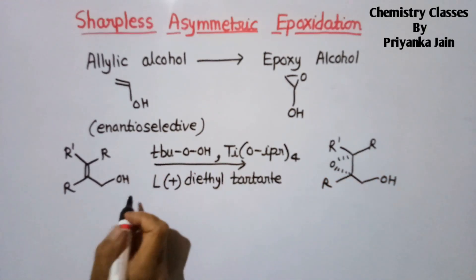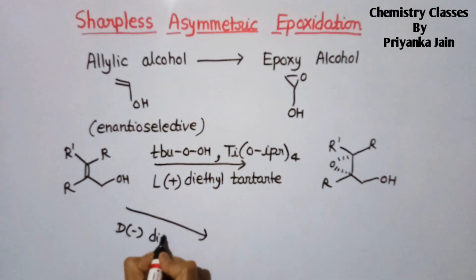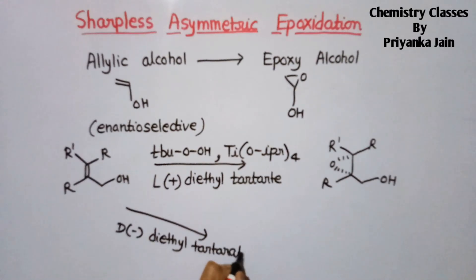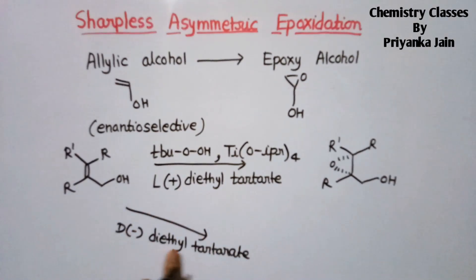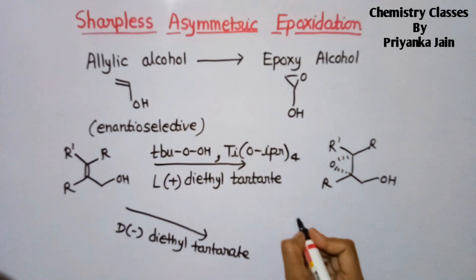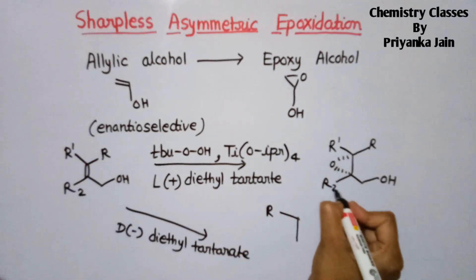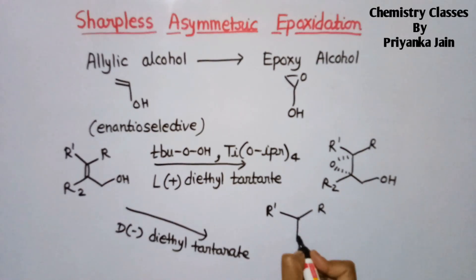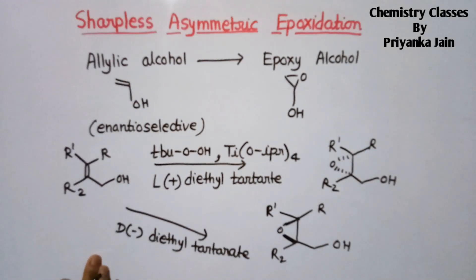When we take the (−) diethyl tartrate — same reagents: TBHP and titanium tetra-isopropoxide — but now with (−) diethyl tartrate, the epoxy ring will be formed above the plane. These are three different R groups, and the ring is above the plane. This is the enantioselectivity of this reaction.